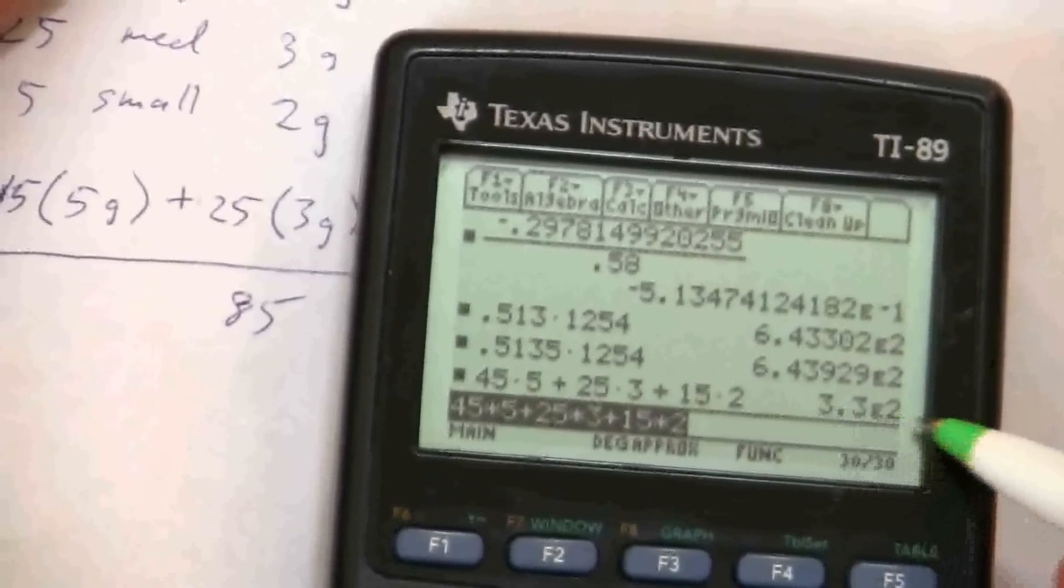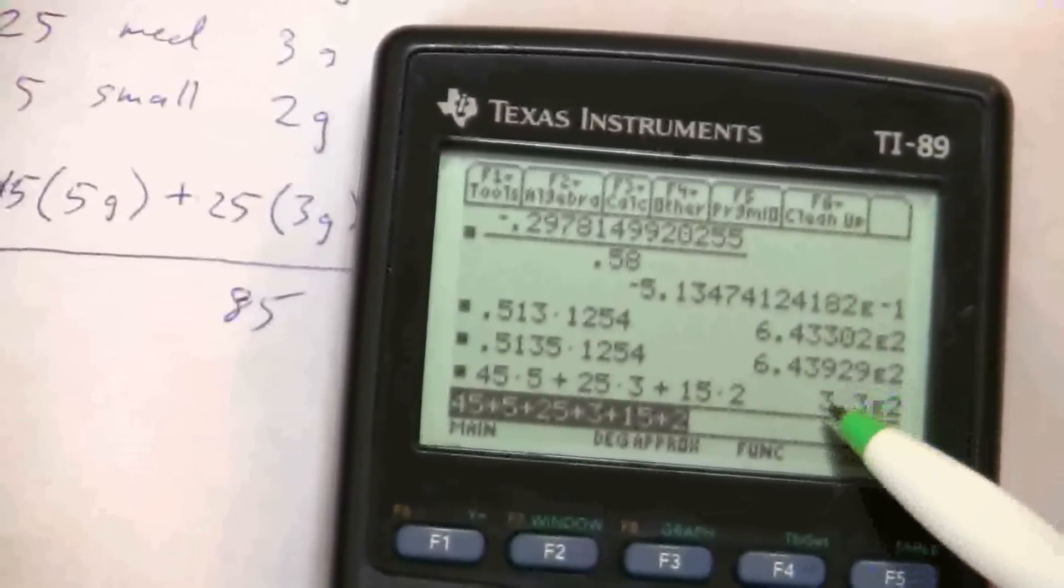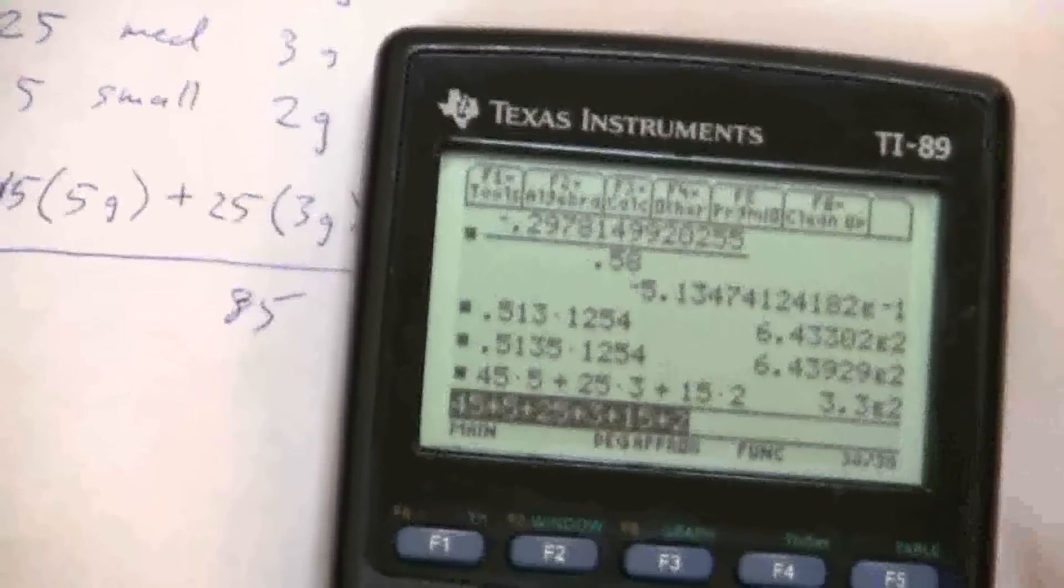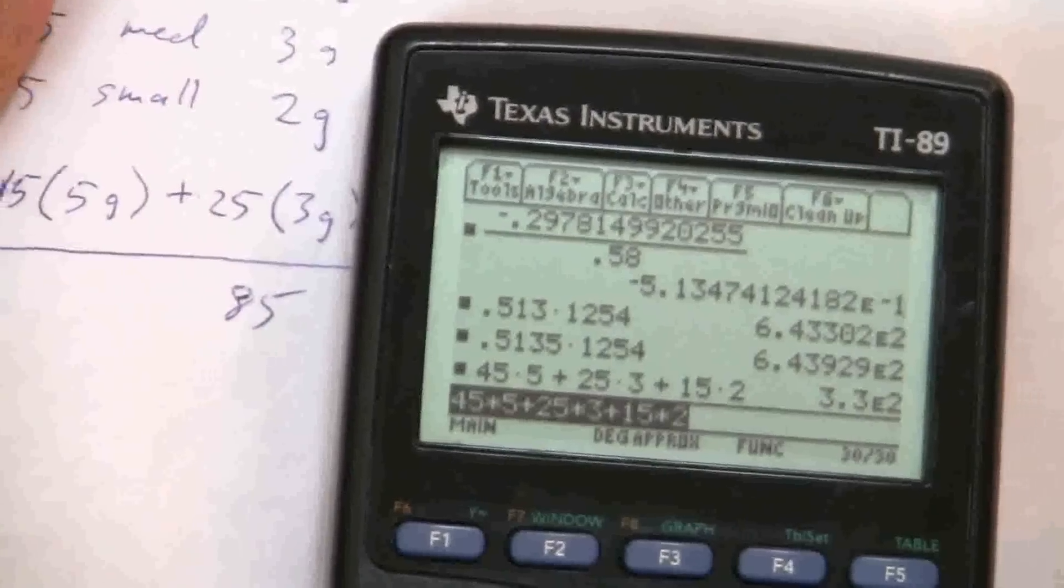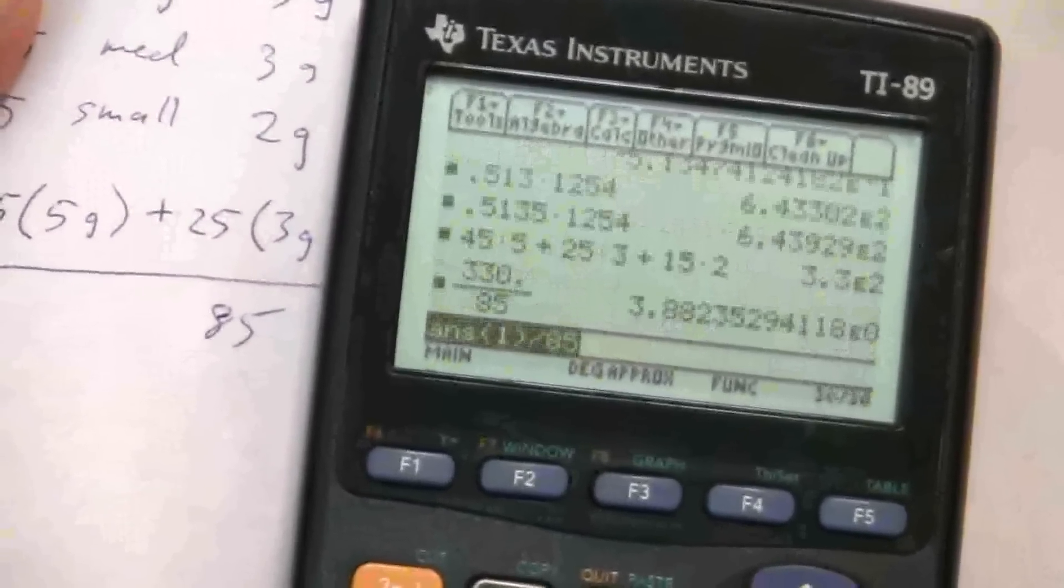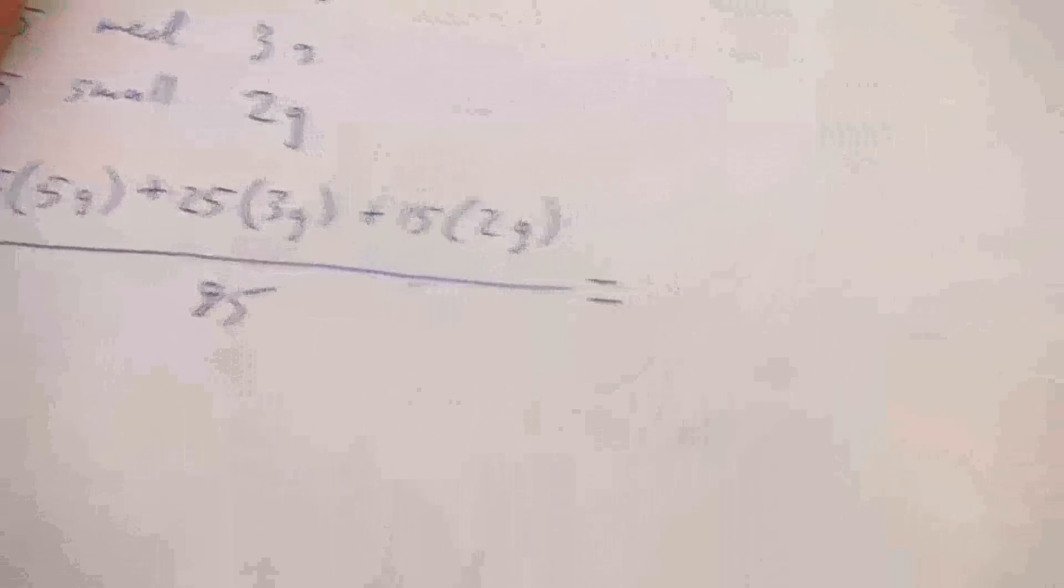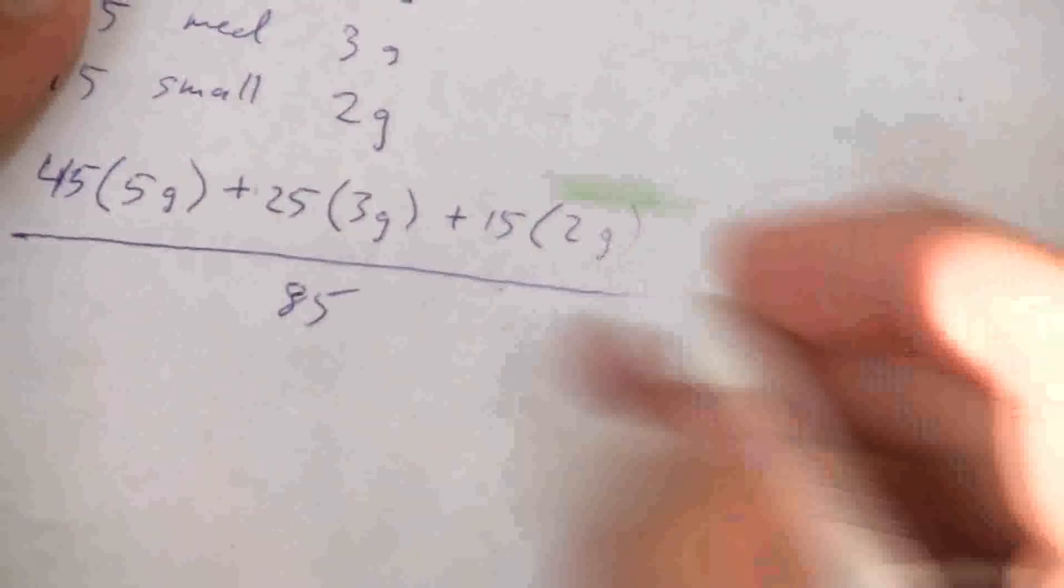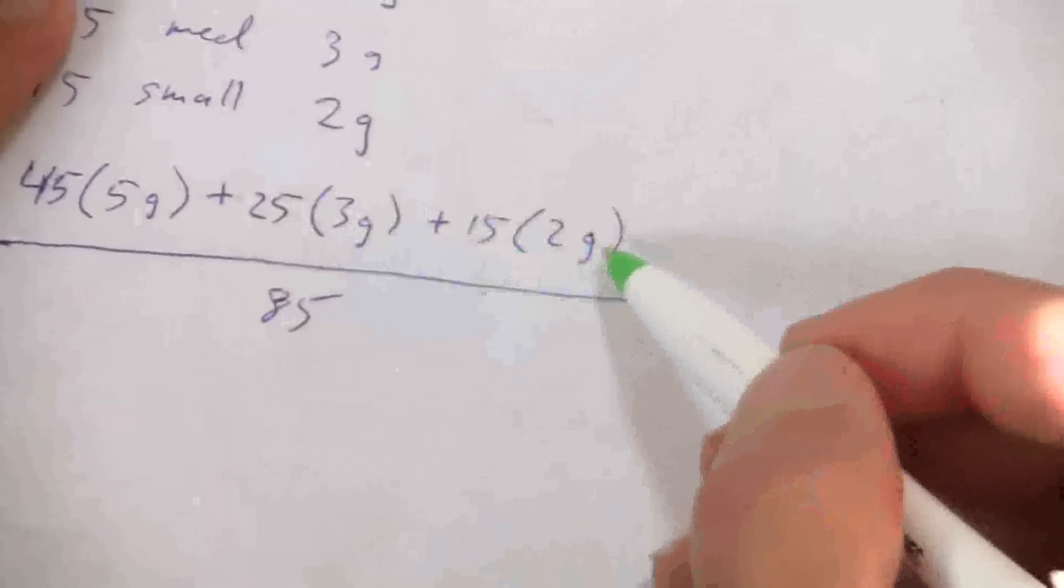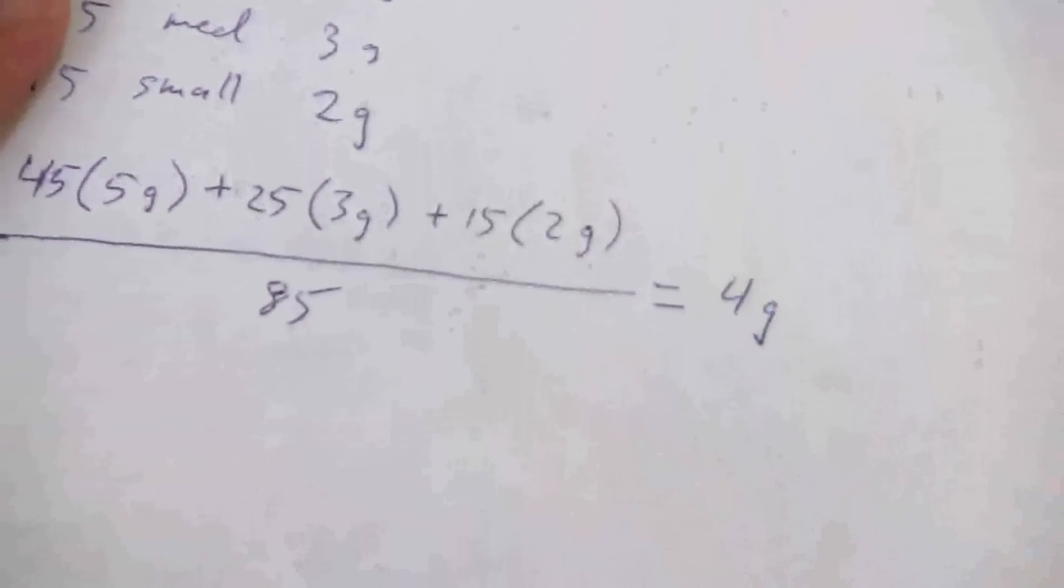My calculator right now is in scientific notation, 3.3 times 10 to the 2 is 330. I divide this by 85 and that gives me an average weight of 3.88. Or if I wanted to be technical about this, these would be measurements and I would round that to 4 grams.